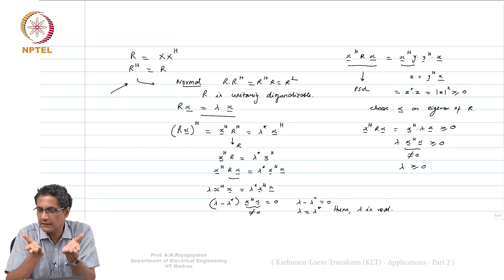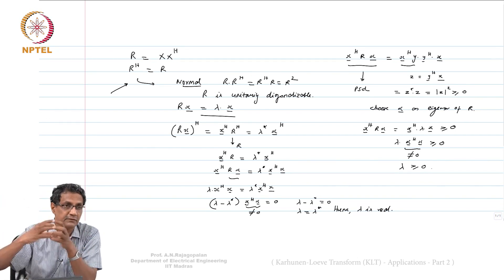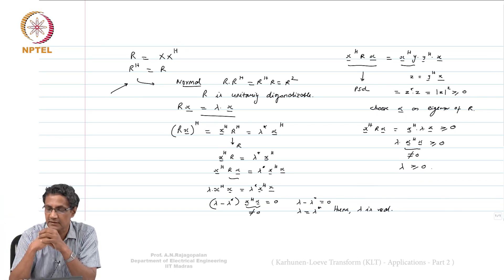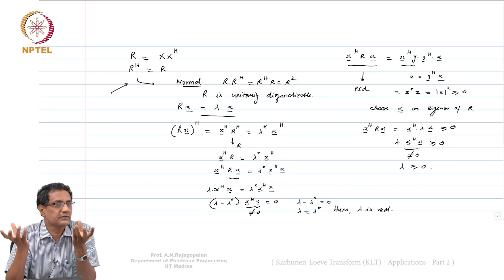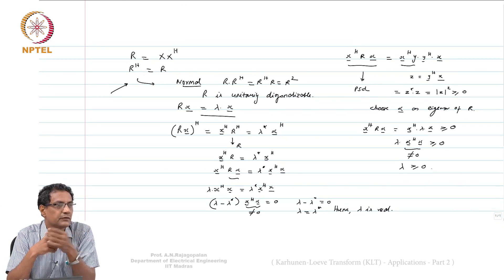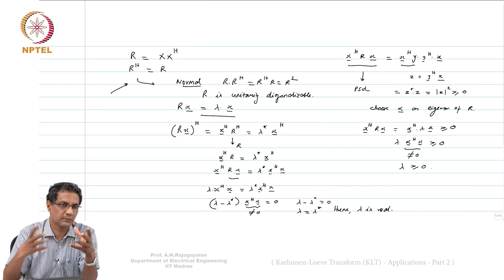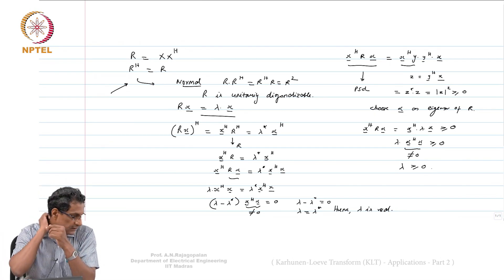The idea behind eigenvalue-eigenvector decomposition is to capture directions along which variances are maximum. The orientation comes from the eigenvector, and the actual significance of how much spread exists comes from the eigenvalues. Therefore, you choose eigenvalues to decide how many eigenvectors to select and which ones to choose.